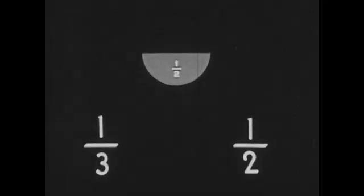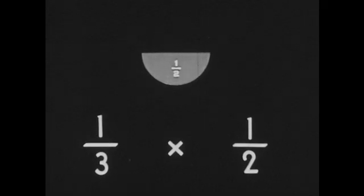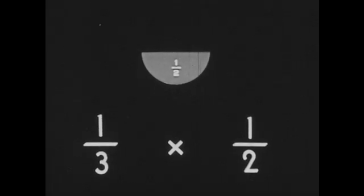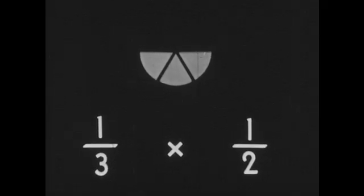Now suppose the number we are multiplying is not a whole number but is a fraction, such as one half. Let's make our problem one third times one half. One half is our whole group now. How many times do we have it? Not even one time — we have it only one third of a time. The denominator of the fraction we are multiplying by is three, so we have to divide one half into three parts. Our numerator is one, so we have only one of those parts in our answer.